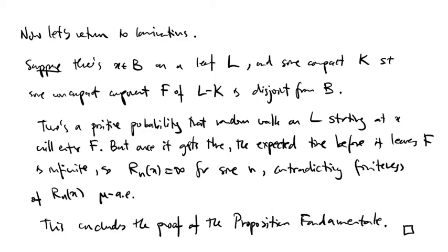Essentially the same argument proves our claim for a leaf of a compact lamination. So we can conclude that if l is a leaf and k is a compact set and x is a point outside that compact set, then the expected time Brownian motion takes to enter the compact set k starting at x is infinite.